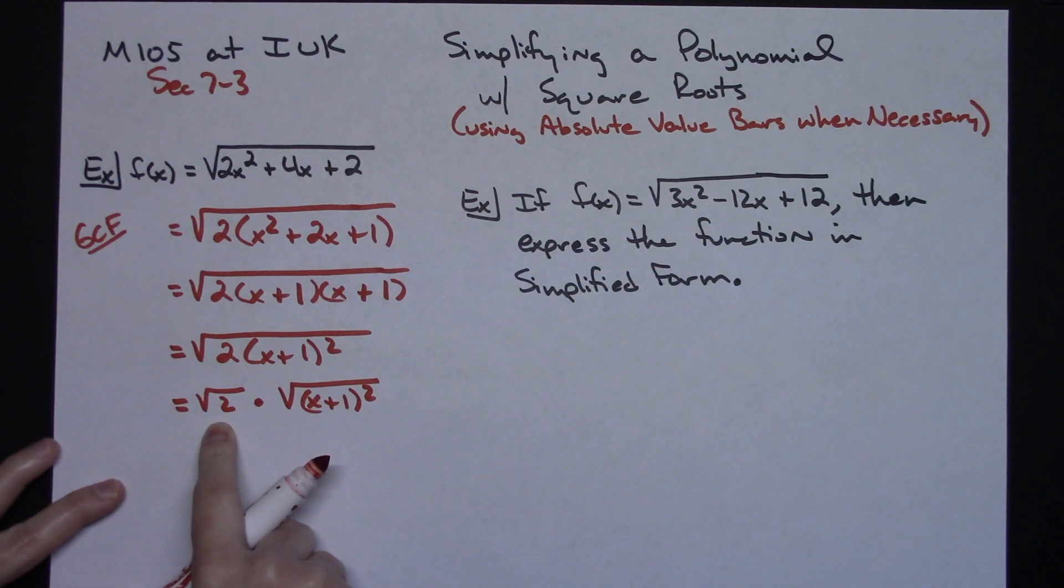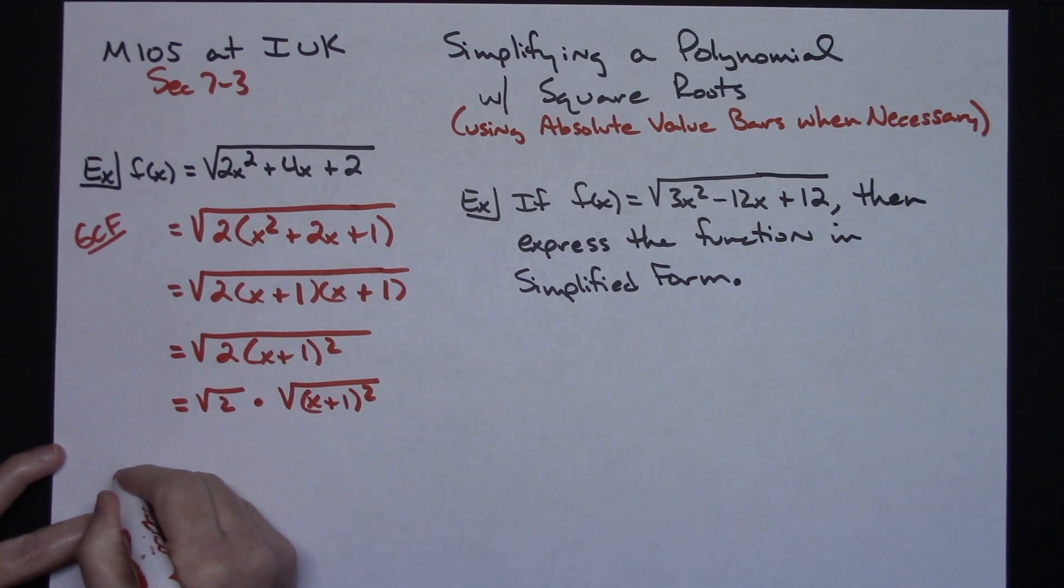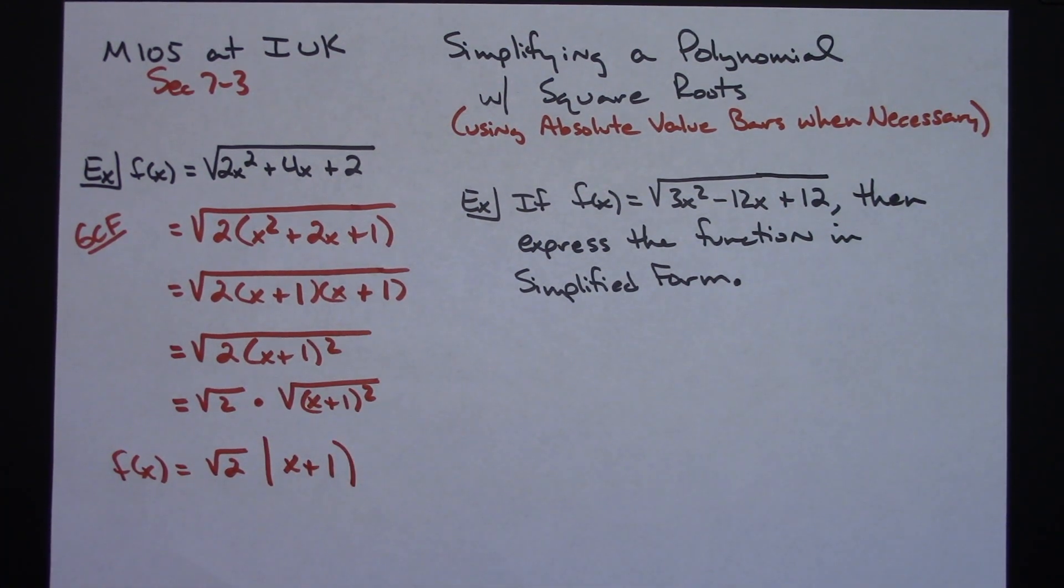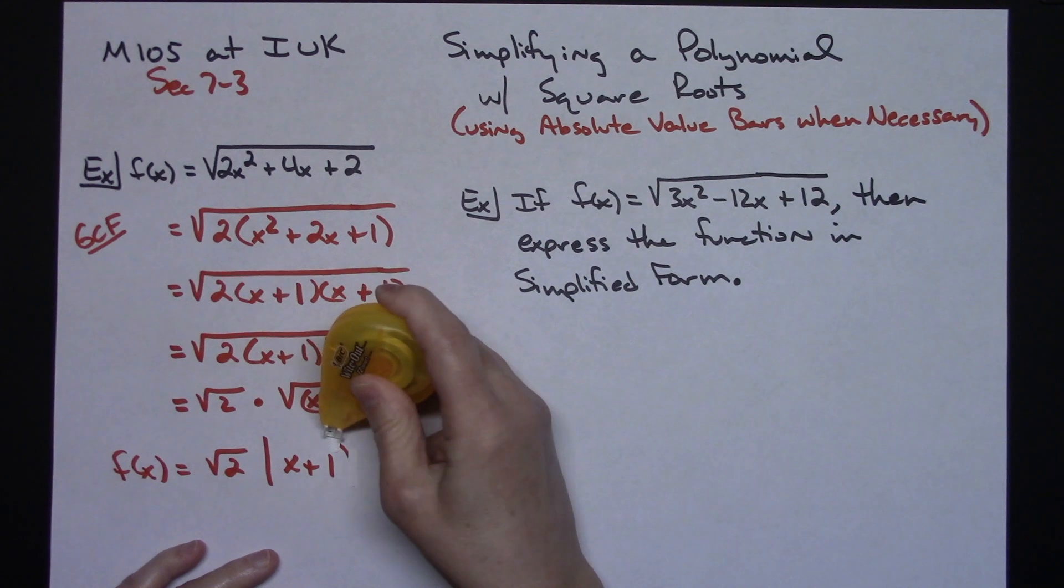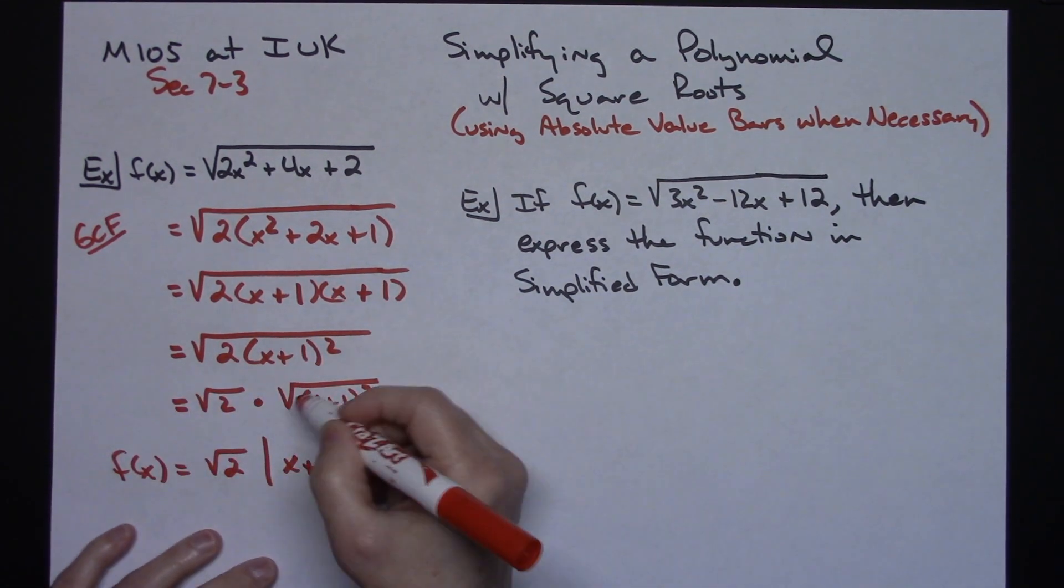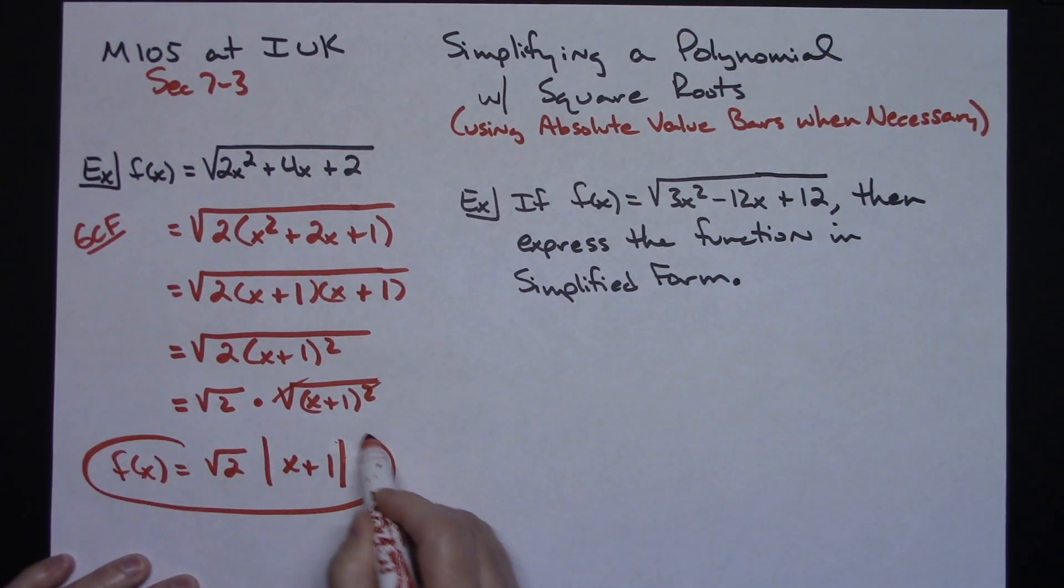Square root of 2 can't do anything with that. This if we are using our absolute value bars, this would be a scenario where we would have to take the absolute value of that x plus 1. So our f of x is going to simplify down to the square root of 2, absolute value of x plus 1. Because square root and square kind of cross each other out. So pretty straightforward there.